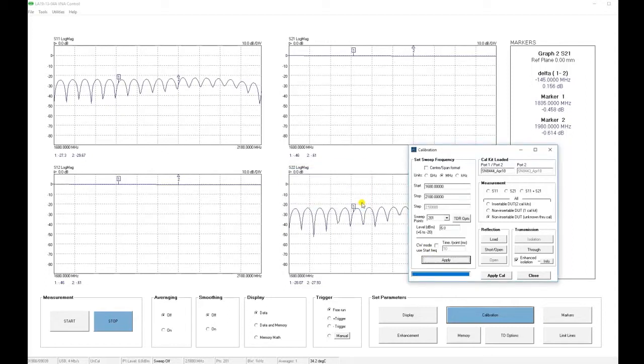For the enhanced isolation calibration to work best, we select the insertable DUT measurement, and we make sure we have this checkbox here ticked. That ensures we use the enhanced isolation calibration technique. At the moment, I have the measurement bandwidth set to 1 kHz, so the first step that we can carry out is the through calibration step.